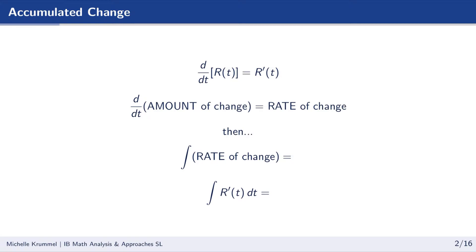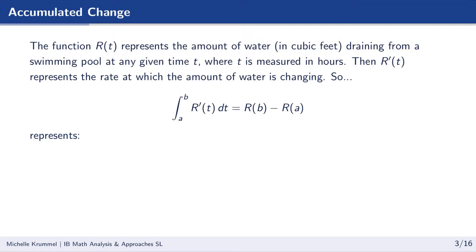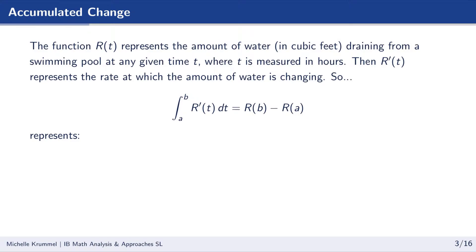And that means if we take the antiderivative of the rate of change, we should get the amount of change. So if we integrate r prime of t dt, we should get r of t plus our constant of integration. If we set up a definite integral from a to b of r prime of t dt, we know from the fundamental theorem of calculus that equals the antiderivative r evaluated at the upper limit minus the antiderivative evaluated at the lower limit.